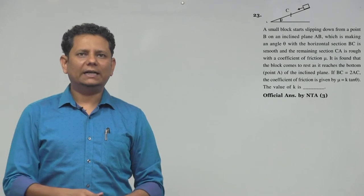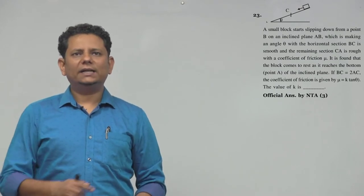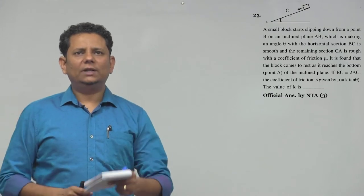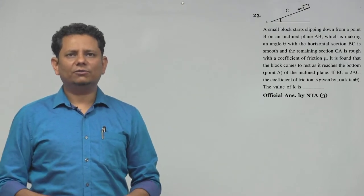Next question. A small block starts slipping down from a point B on an inclined plane AB which is making angle theta with the horizontal. Section BC is smooth and remaining section CA is rough with a coefficient of friction mu.